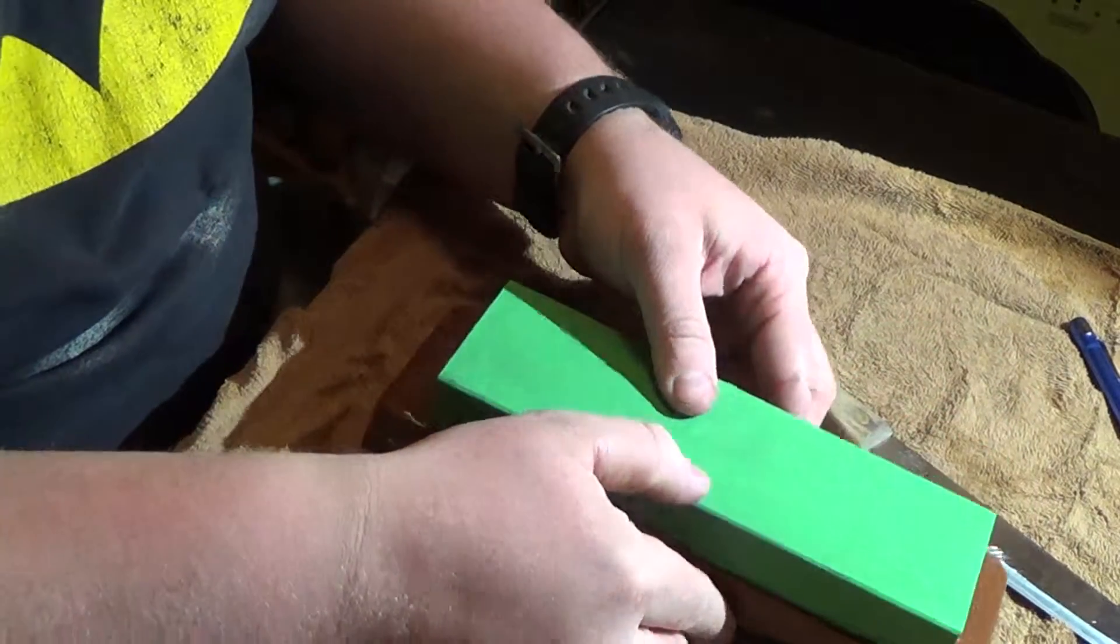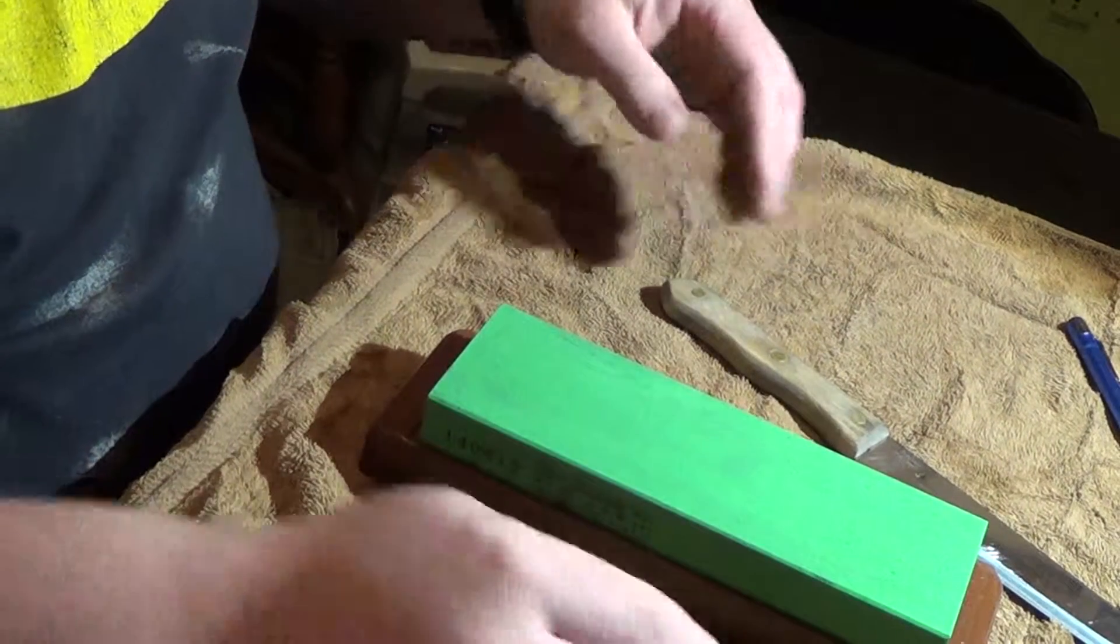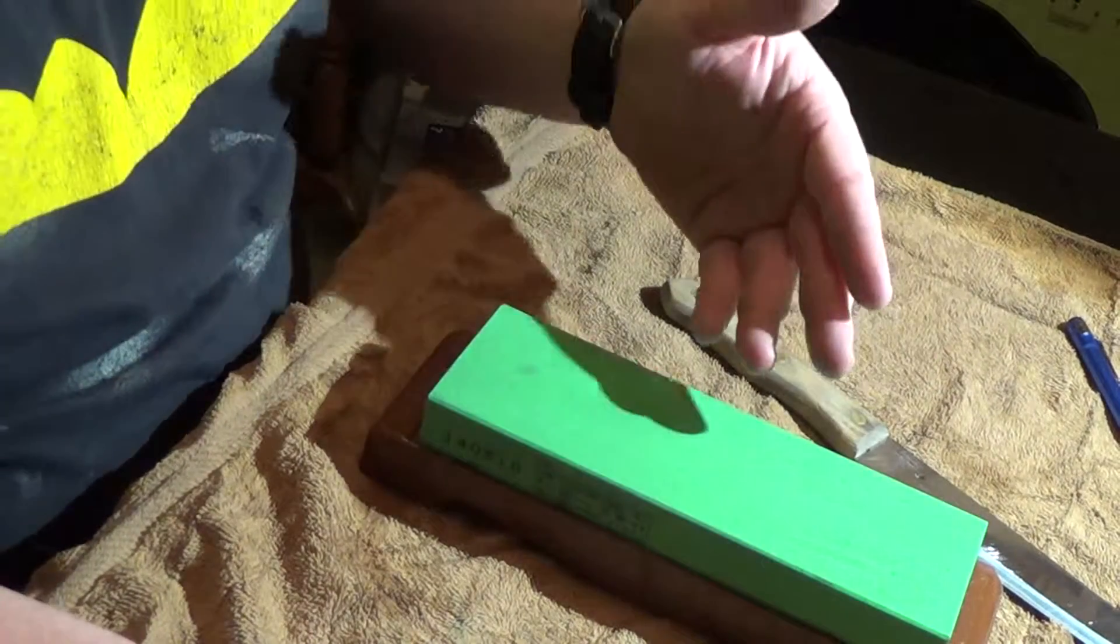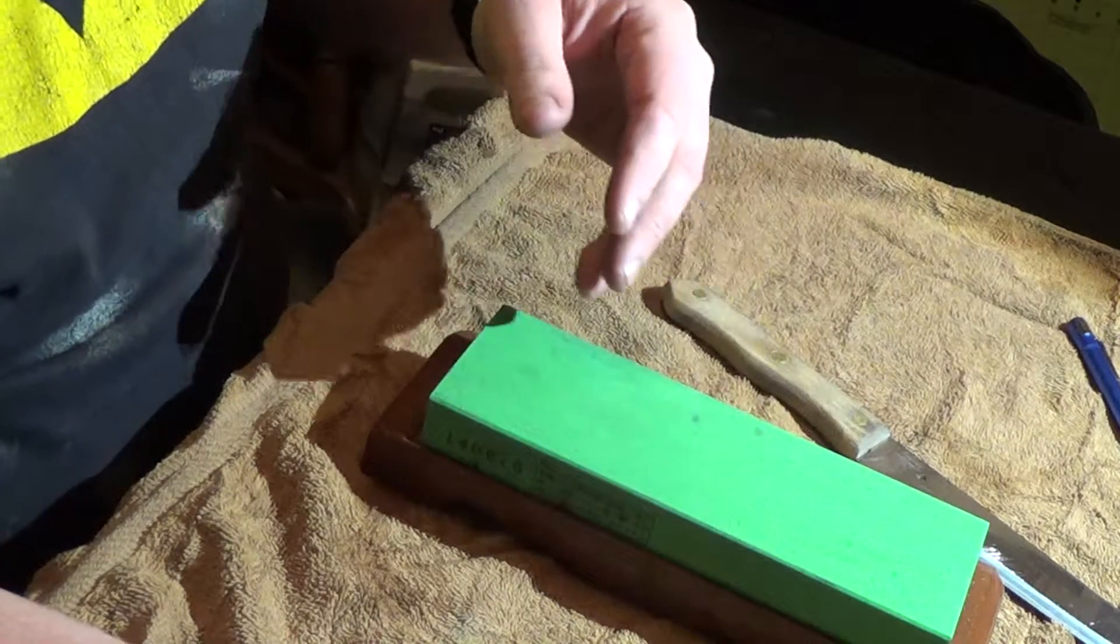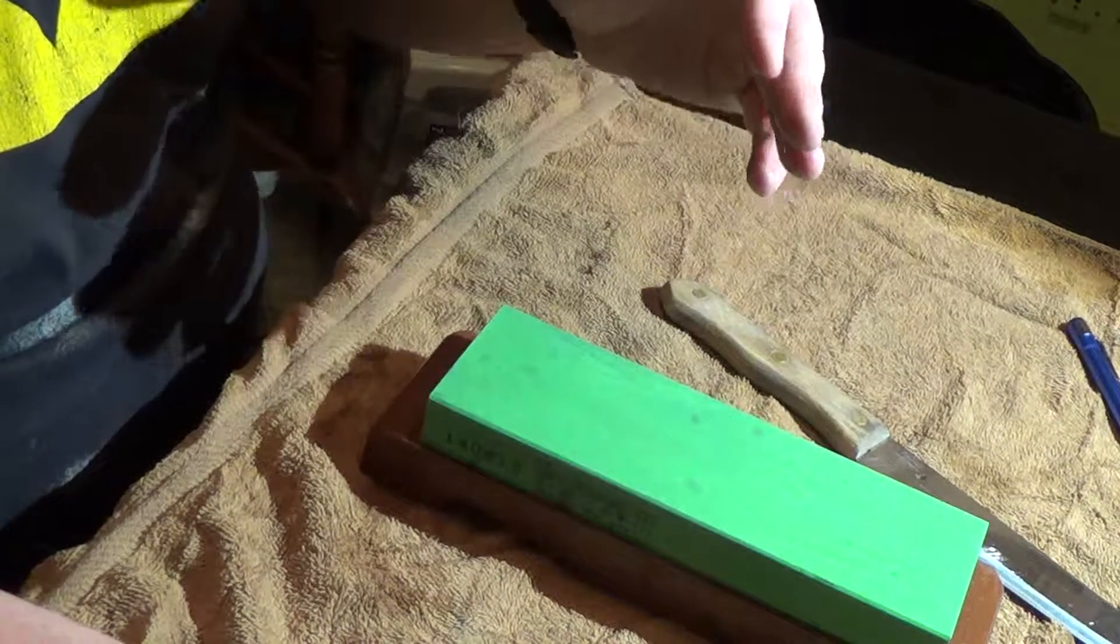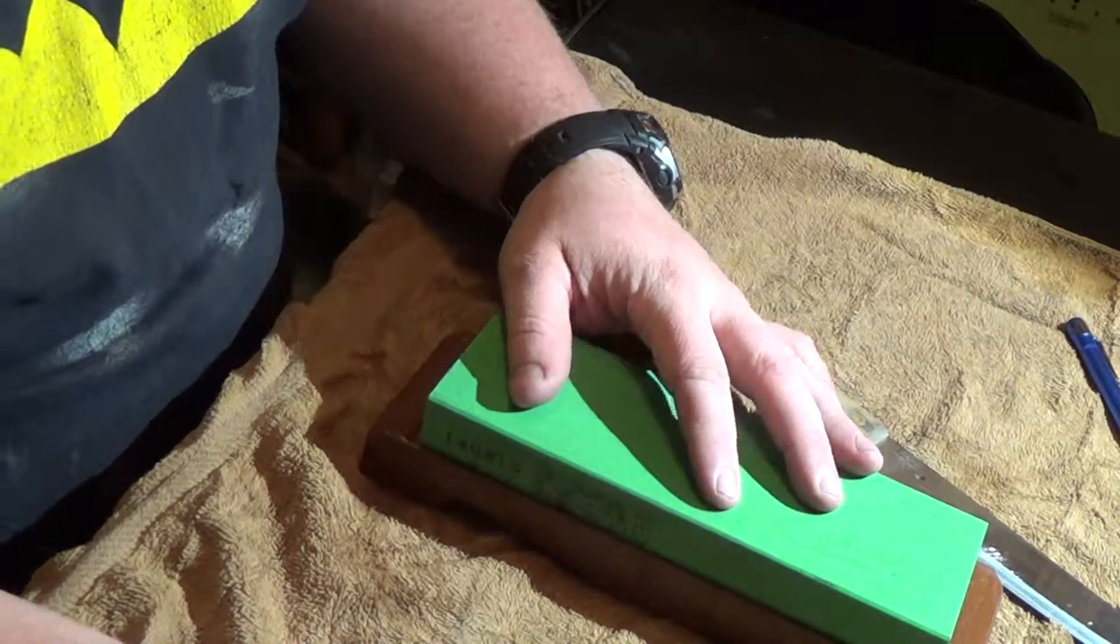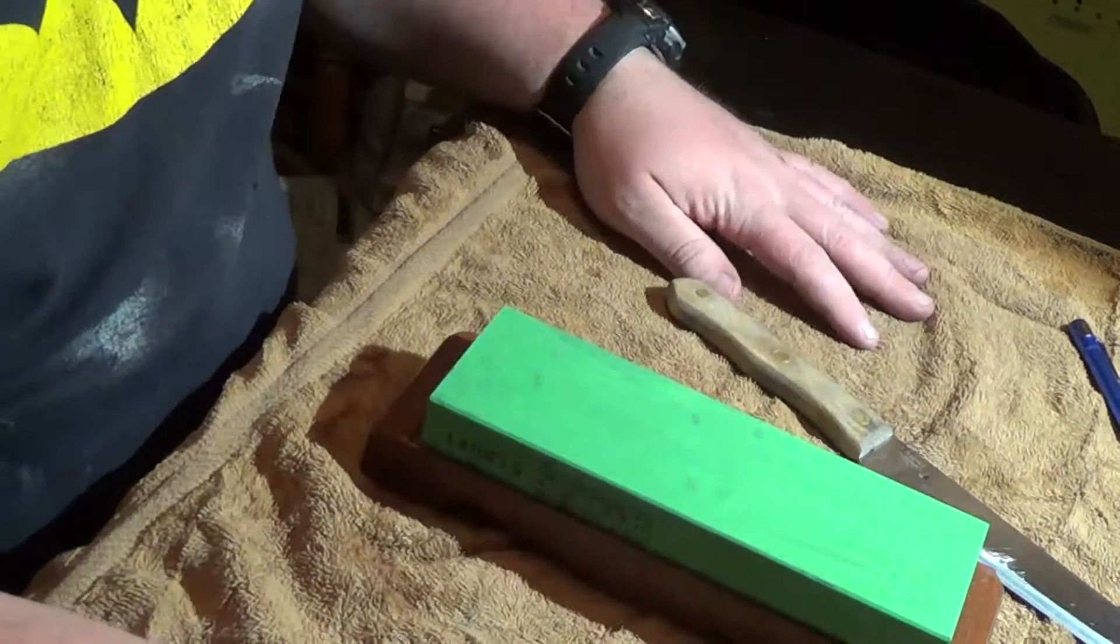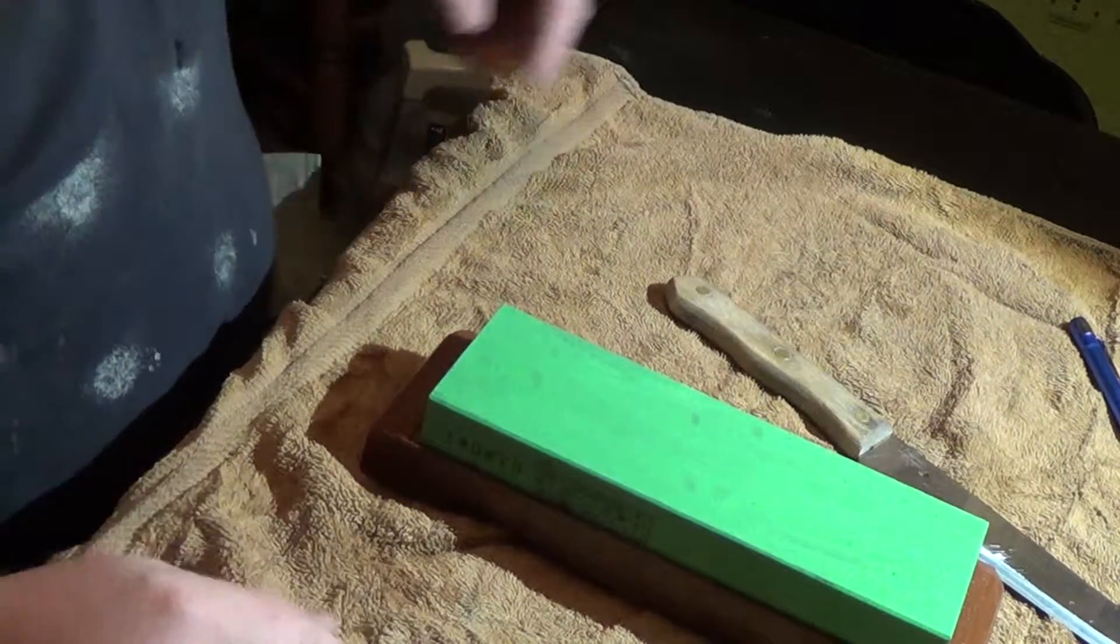This is my coarse stone, but what I'm going to show you can be said of a 220 grit stone. You could do this on sandpaper, it works the same. Diamond stones, it all works the same.